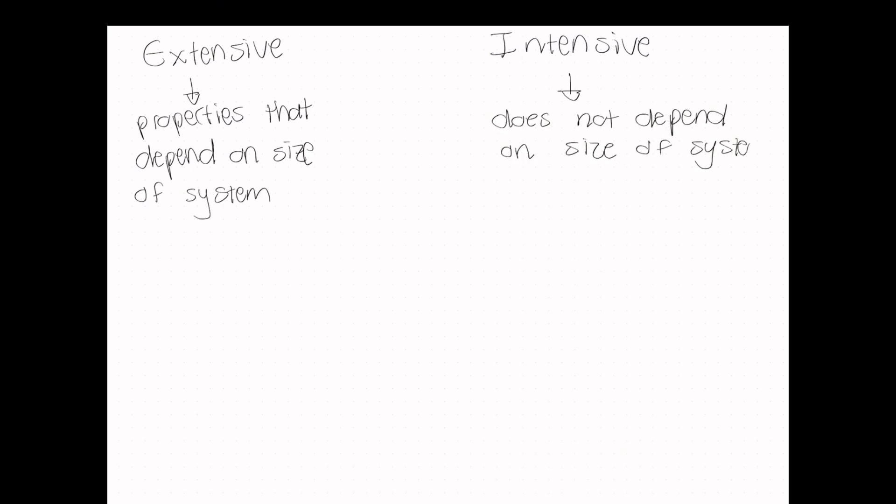There are other properties which we use to describe our system and the state in which our system is. These can be classified as being extensive or intensive. Extensive properties are properties that depend on the size of the system, while intensive properties do not depend on the size of the system.